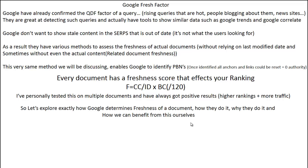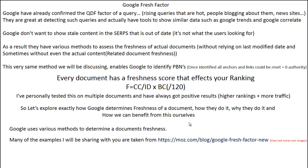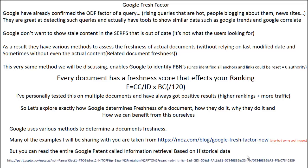Let's explore exactly how Google determines freshness of a document — how they do it, why they do it, and how we can benefit from it. Google uses various methods to determine a document's freshness. Many of the examples I'm going to share are taken from Moz — the URL is shown here. But if you want to read the main Google patent itself, which is called 'Information Retrieval Based on Historical Data,' you can find it at the link shown. I'll try to leave links to these URLs in the video description.